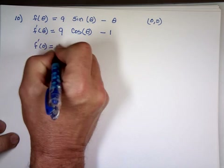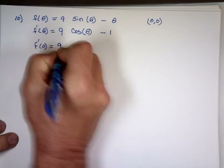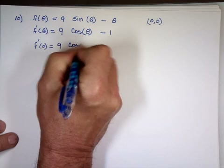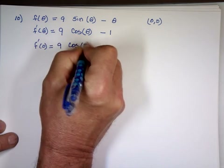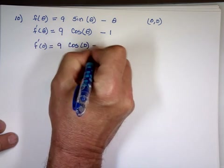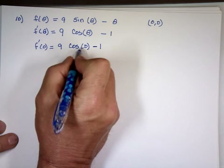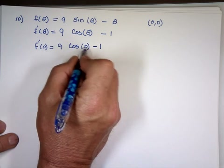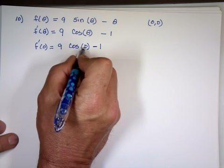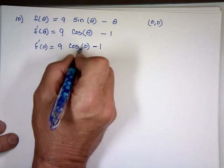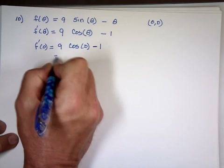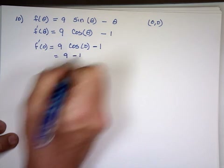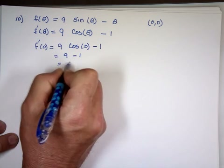Now what is the derivative when theta is 0? That's 9 times cosine of 0 minus 1. Cosine of 0 on the unit circle is 1. So 9 times 1 minus 1 equals 8.